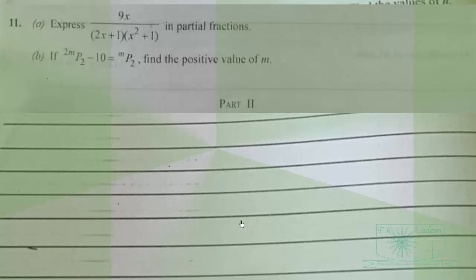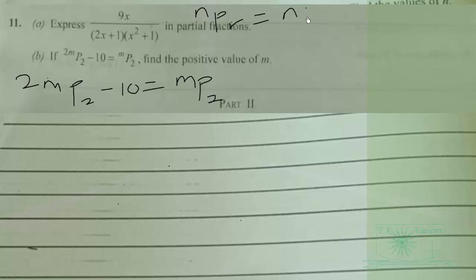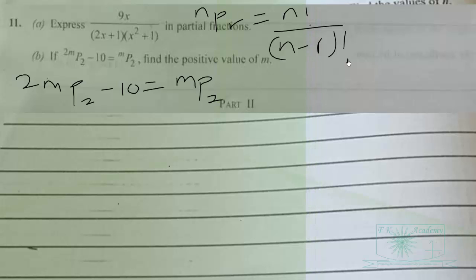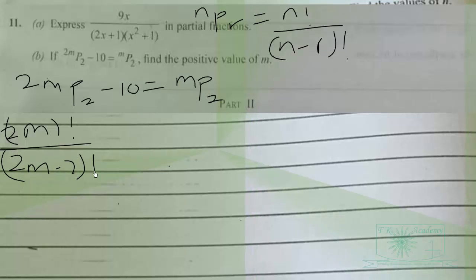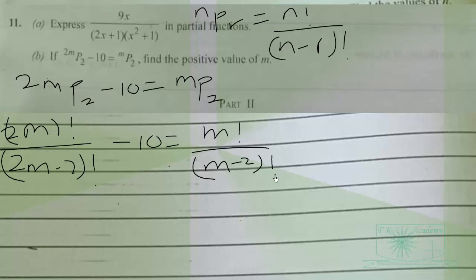Now for part b of the question: if 2m P 2 − 10 = m P 2, find the positive value of m. Remember that nPr = n! / (n − r)!. So 2m is standing for n, giving us (2m)! / (2m − 2)! − 10 = m! / (m − 2)!.